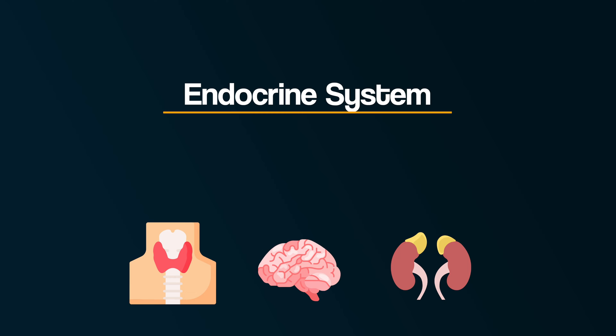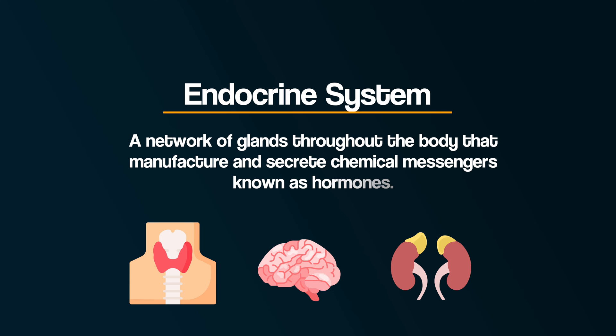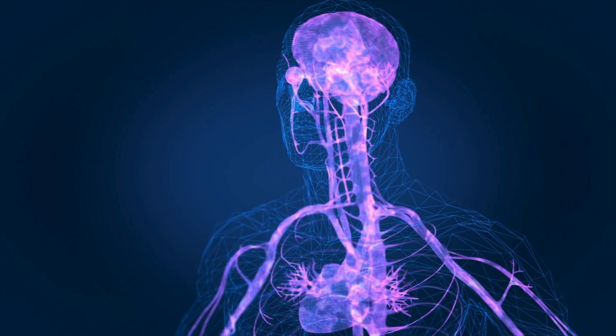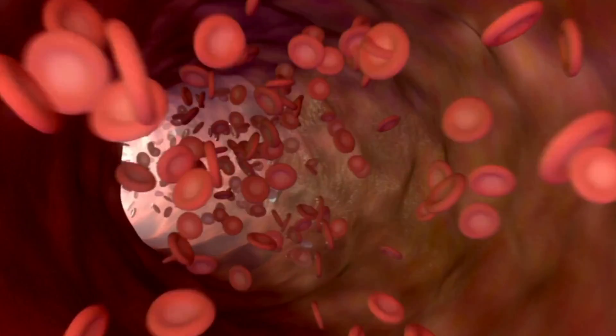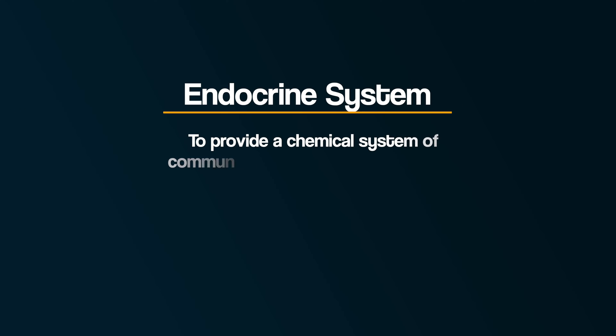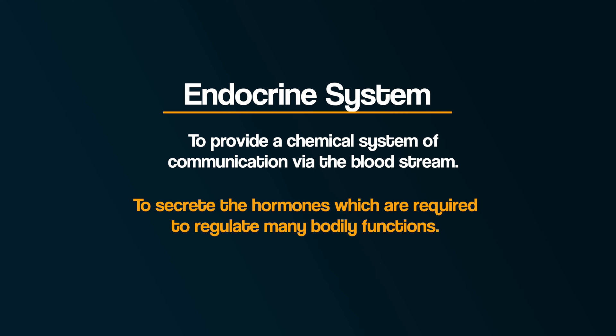In addition to the work of the nervous system, the endocrine system is involved through a network of glands throughout the body that manufacture and secrete chemical messengers known as hormones. So instead of using nerves to transmit information like the nervous system, the endocrine system instructs glands to release hormones directly into the bloodstream. These hormones affect any cell in the body that has a receptor for that hormone. It acts much more slowly than the nervous system, but has very widespread and powerful effects. The function of the endocrine system is to provide a chemical system of communication via the bloodstream, and to secrete the hormones which are required to regulate many bodily functions.